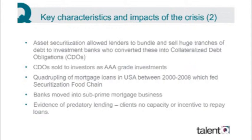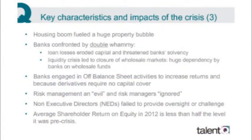Predatory lending by banks then exploded. The banks did not take any precautions. The client in general did not have the capacity nor the incentive to repay the loan. The housing boom in the States and in other countries fuelled a huge property bubble. Bad debts and subprime CDOs led to a fall in what were really overinflated house prices.